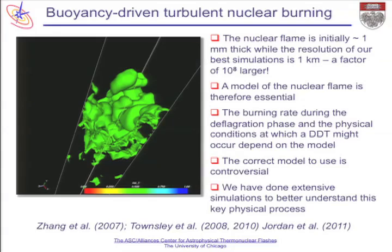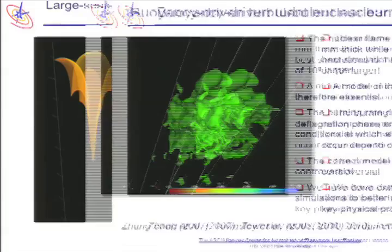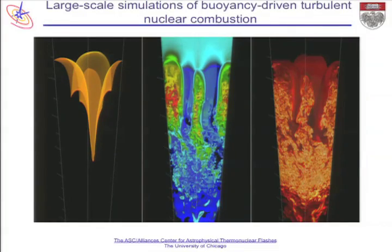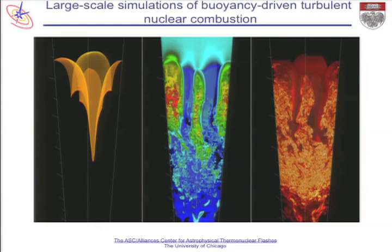These simulations—the largest capstone ones—involve upwards of beyond 4 billion grid points, so they're very extensive. Before I show you a movie about them, I want you to see what you'll be looking for. This is the flame surface, which will become turbulent. This is the kinetic energy in the turbulence, and this is the entropy, which tells you something about the energy in it.